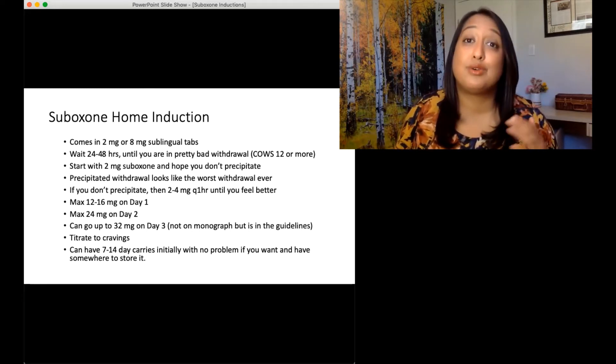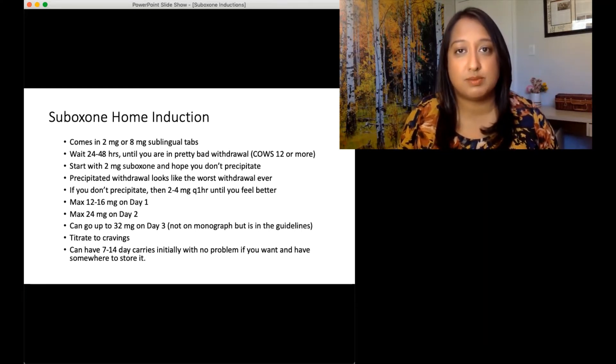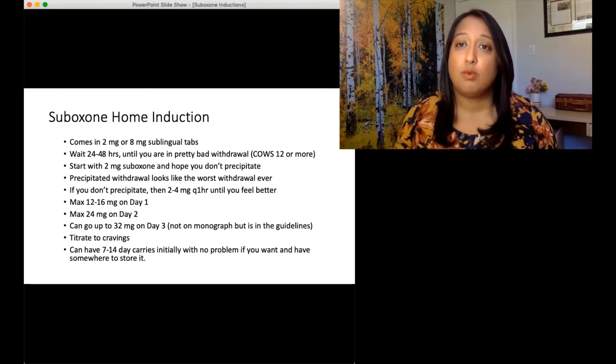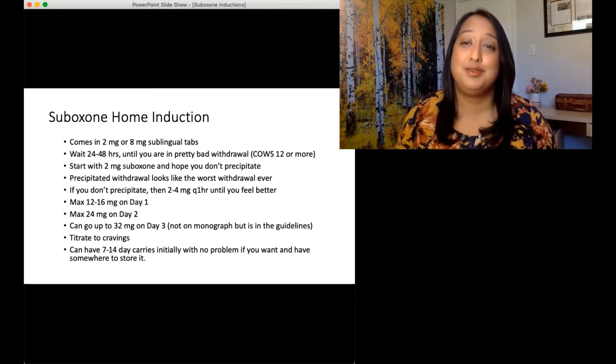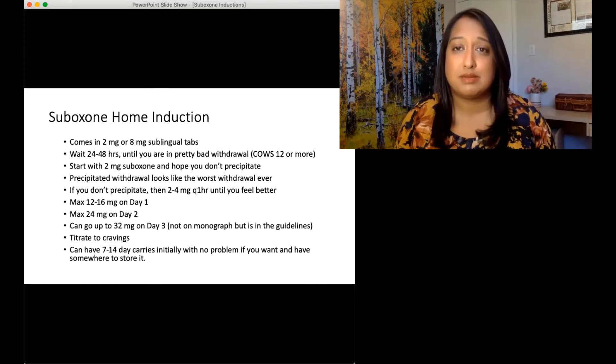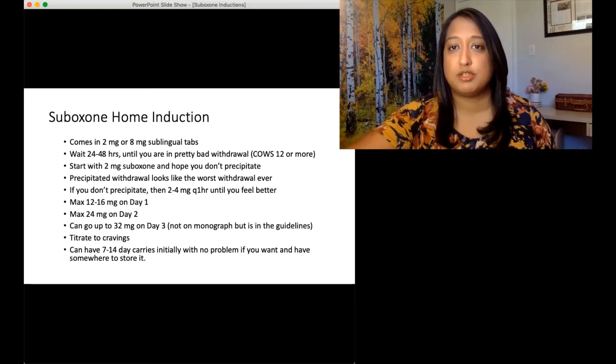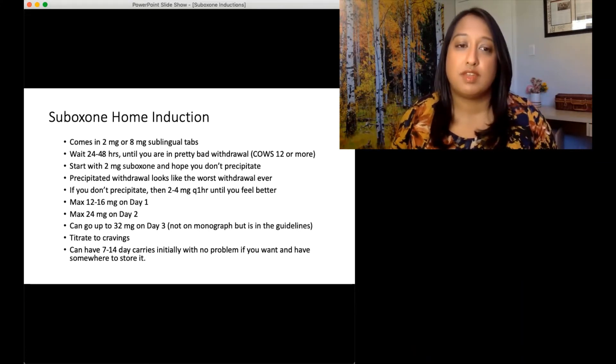You wait until the patient's in really bad withdrawal. So like moderate to severe withdrawal. COWS of at least 12, but the higher the COWS, the lower the risk of precipitated withdrawal. Then once people are writhing, then you start with your two milligram Suboxone test dose. And you hope that that doesn't precipitate them. You hope that they were in bad enough withdrawal. There was not enough of the opioids on the receptors had left.